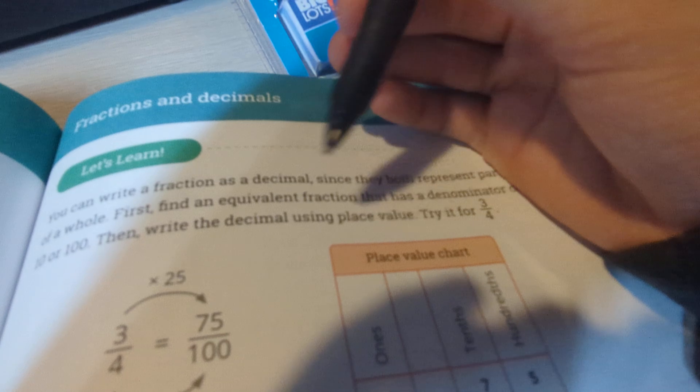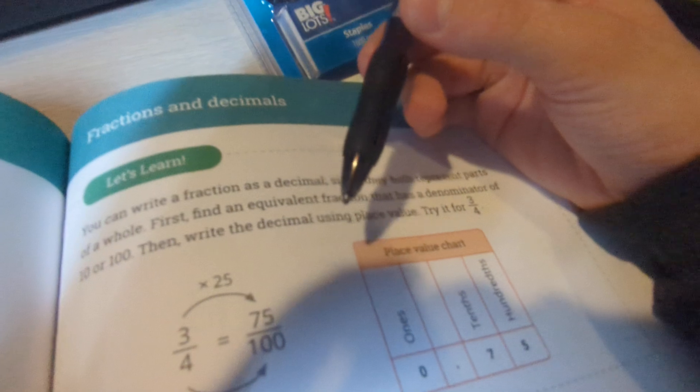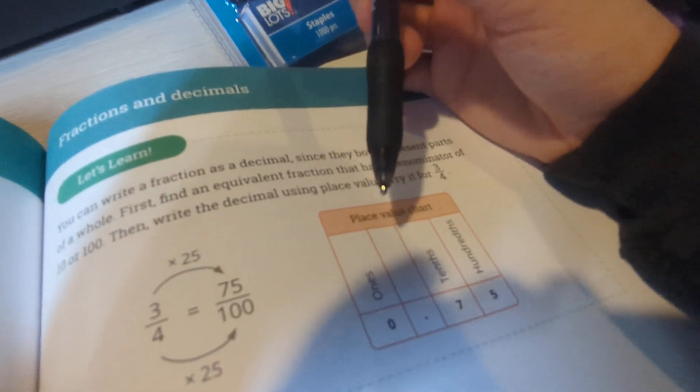First, find an equivalent fraction that has a denominator of 10 or 100. Then write the decimal using place value.